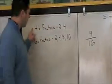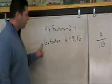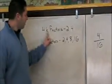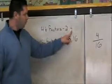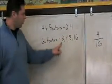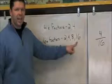Here are the factors of 4 and 16. Factors of 4 are 2 and 4. The factors of 16 are 2, 4, 8, and 16.